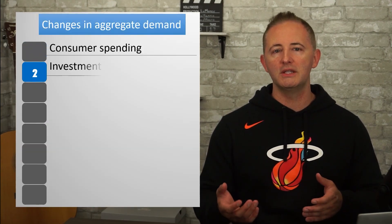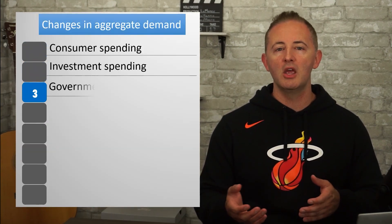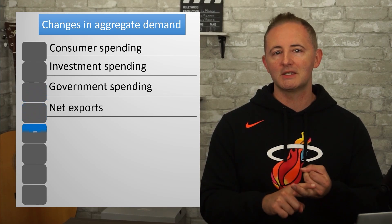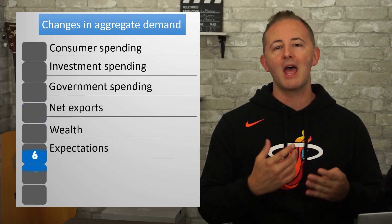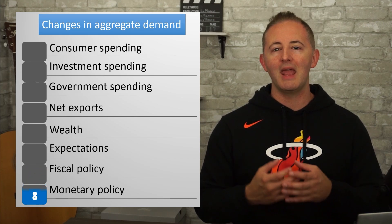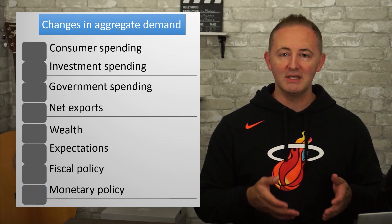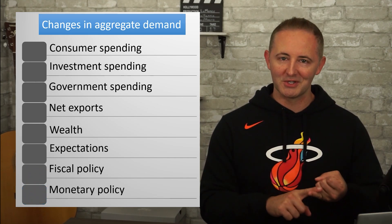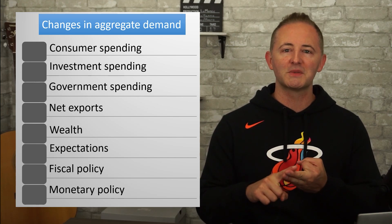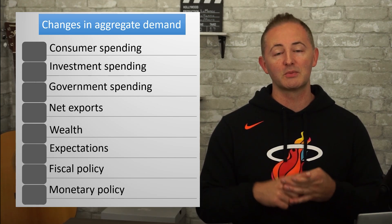Let's talk about what shifts the AD curve. Since AD equals C plus I plus G plus XN, those are our shifters of AD. The AD curve will increase and shift right when consumer spending, investment spending, government spending, or net exports increase. And AD will decrease and shift left when any of those components decrease.